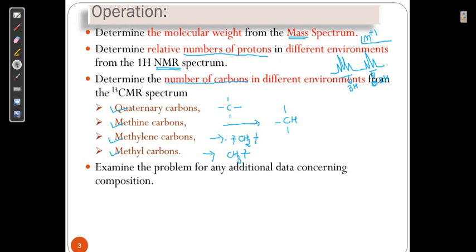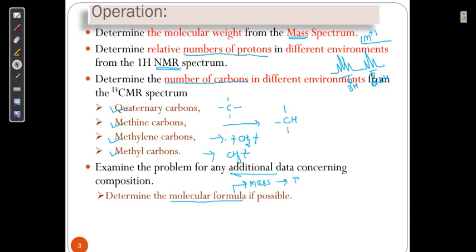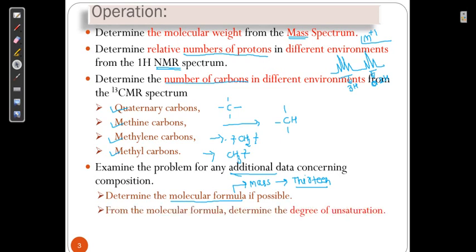After getting the 2D echo, ECG, and CMR, we have some additional data. If the molecular formula is directly given then there is no problem; if only mass is given, then based on 13 rules — which we will see in a coming video — we determine the molecular formula. The degree of unsaturation is also an important part. It gives us an idea about the number of pi bonds plus the number of rings in an organic compound.